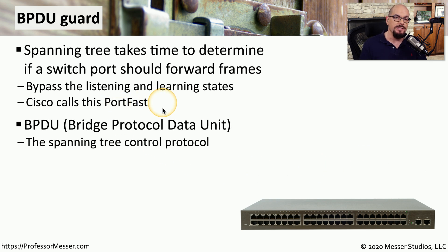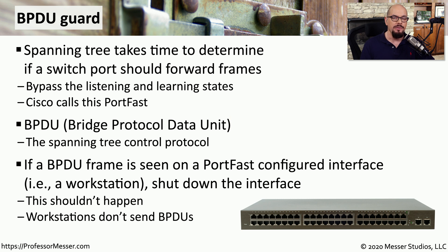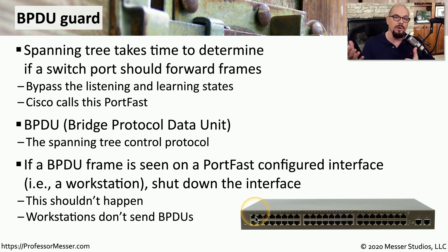The problem is that someone could plug in another switch on a PortFast-enabled connection, creating a loop. To combine the speed of PortFast with the security of Spanning Tree, we can configure BPDU Guard. BPDU stands for Bridge Protocol Data Unit — the primary protocol used by Spanning Tree. With BPDU Guard, the switch monitors those interfaces, and if a BPDU frame is ever received, it recognizes a switch may be on the other side, disables that interface, and prevents a loop from occurring.